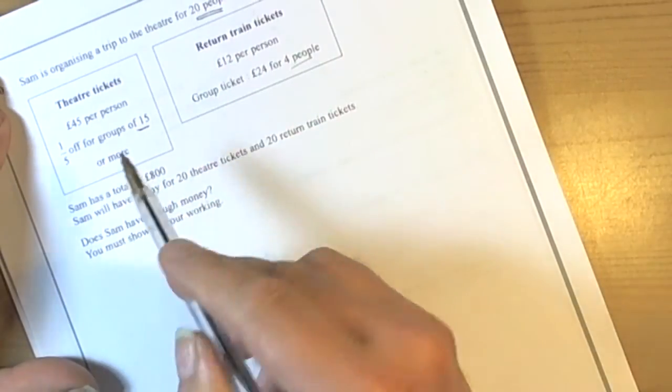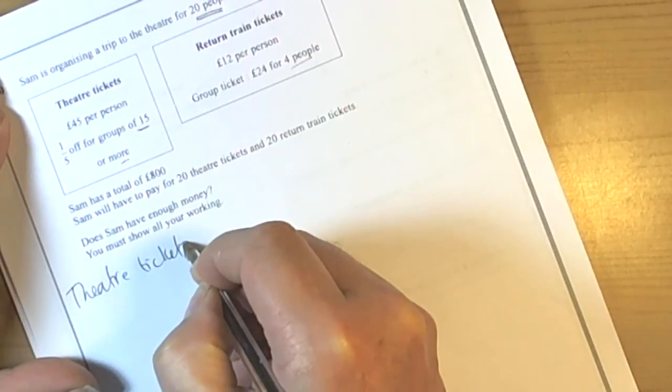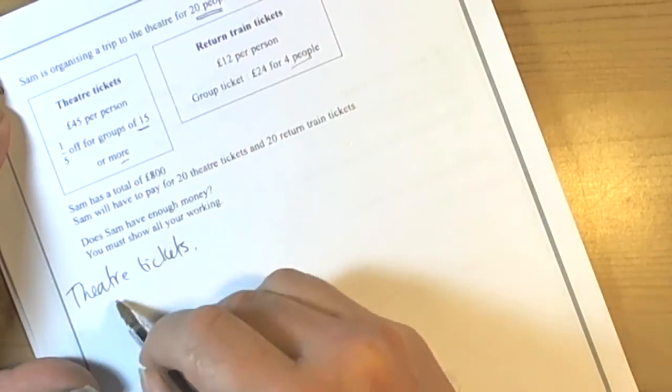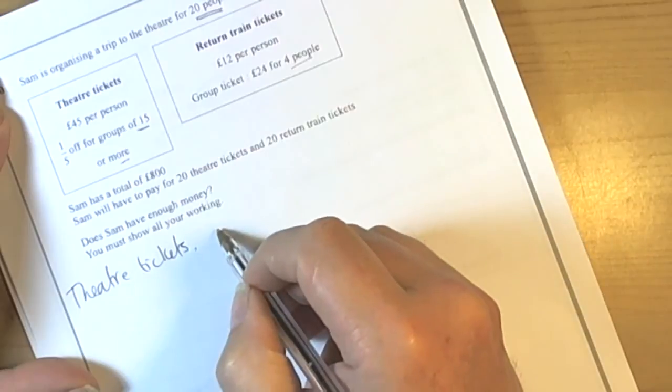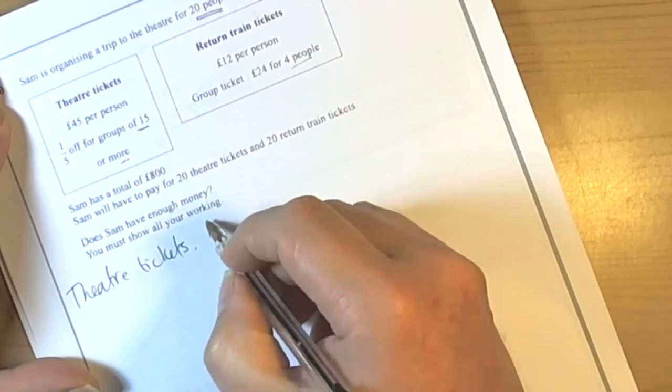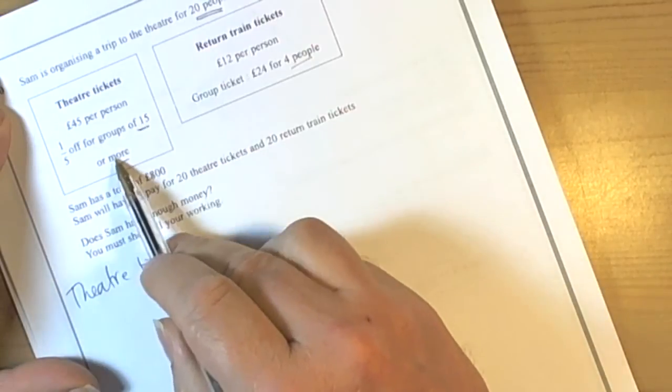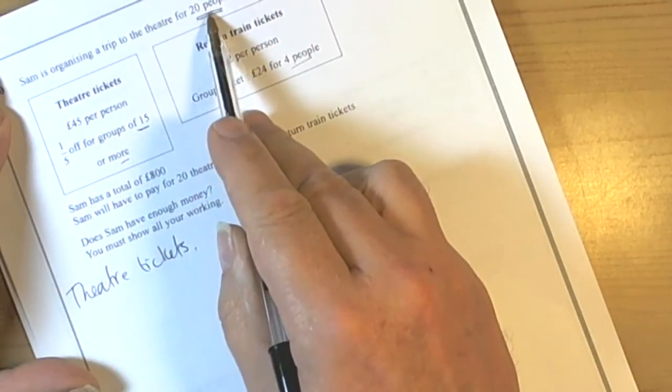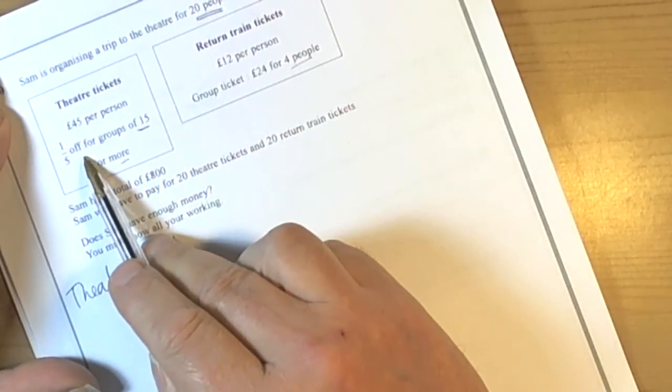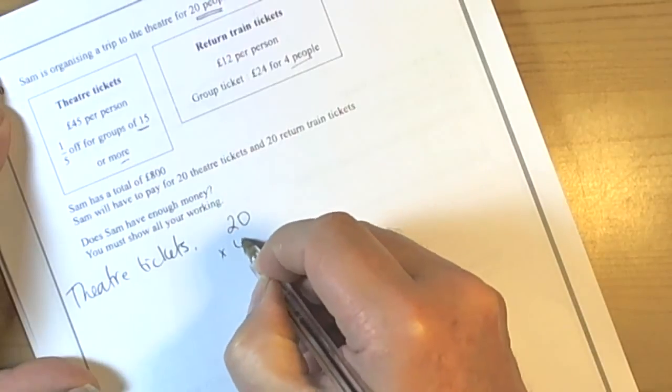So let's look at theatre tickets first, so again it's a start question, so let's try and make sure we're writing out a full method in a logical way. So theatre tickets, he gets one-fifth off for groups of 15 or more. Well there's a group of 20 here, so he's going to get a fifth off the price that he's going to pay. So the first thing we've got to do is work out what 20 times 45 is.